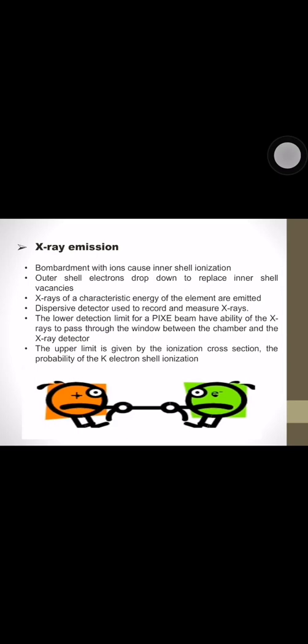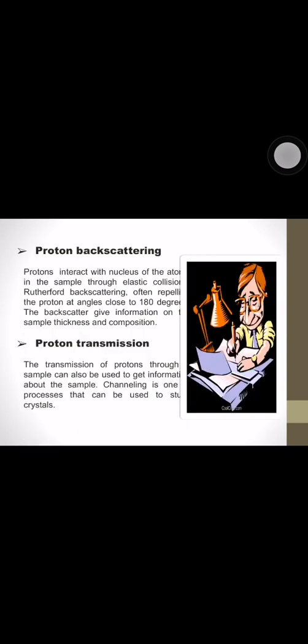Therefore, three MeV proton beam is optimal. The second one is the proton backscattering. Protons can also interact with the nucleus of the atom in the sample through elastic collisions, Rutherford backscattering, often repelling the protons at angle close to 180 degrees. The backscattering gives information on the sample thickness and composition and the bulk sample property, allowing for the correction of x-ray photon loss within the sample. And the last is proton transmission. The transmission of protons through a sample can also be used to get information about the sample.